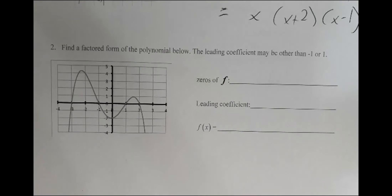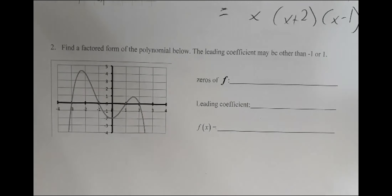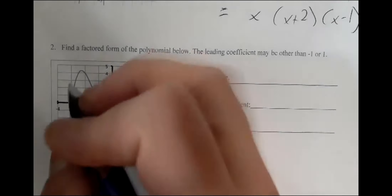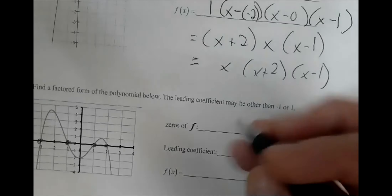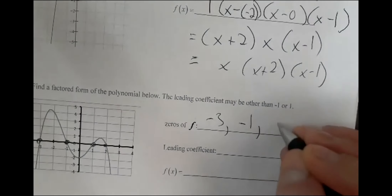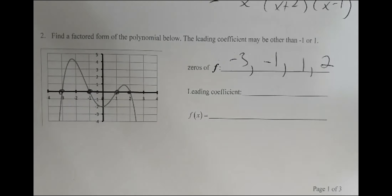Find a factored form of the function below, where the leading coefficient may not be one or minus one — it could be something else. So we're going to have to figure this out on something other than end behavior. So let's look at our zeros of f — and a two. The leading coefficient: from the end behavior you could probably tell me this is an even function with a negative leading coefficient. So we could say it's probably negative.